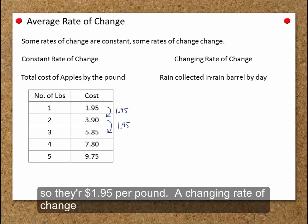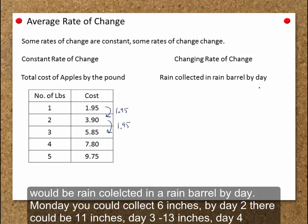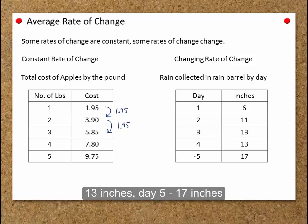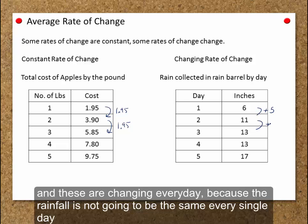A changing rate of change would be rain collected in a rain barrel by day. Monday, you could collect 6 inches. By day 2, there could be 11 inches. Day 3, 13 inches. Day 4, 13 inches. Day 5, 17 inches. And these are changing every day, because the rainfall is not going to be the same every single day.